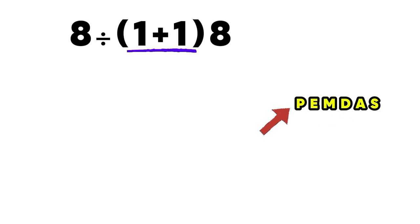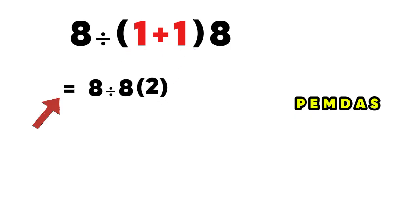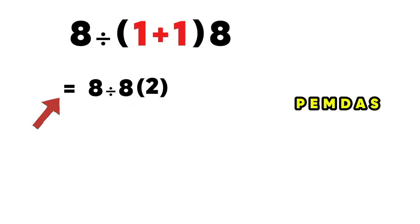So let's start with the parenthesis. Inside the parenthesis, 1 plus 1 equals 2. So our expression becomes 8 divided by 8 times 2. Now we have one division and one multiplication. Since they share equal priority, we work from left to right. So first we do this division — 8 divided by 8 is just 1.